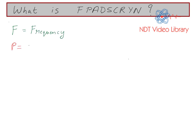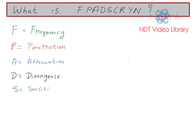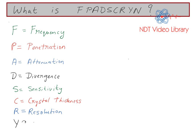F stands for frequency, P stands for penetration, A stands for attenuation — loss of sound — D stands for divergence, the spread of the beam, S stands for sensitivity, C stands for crystal thickness, R stands for resolution, Y if you invert it looks like lambda, which stands for wavelength, and N stands for near field.